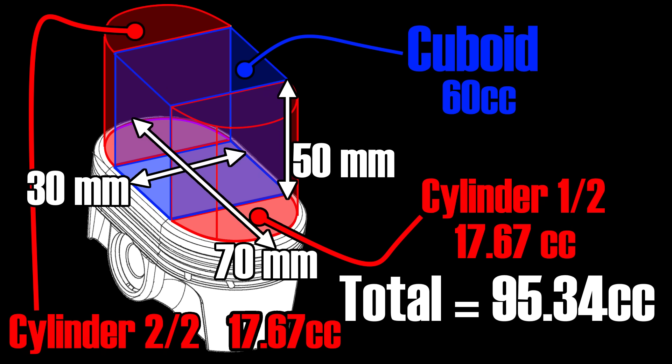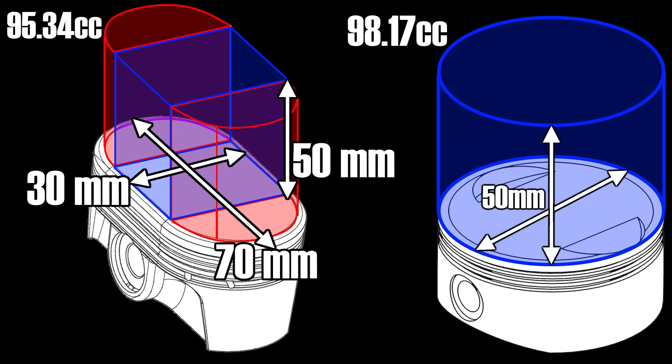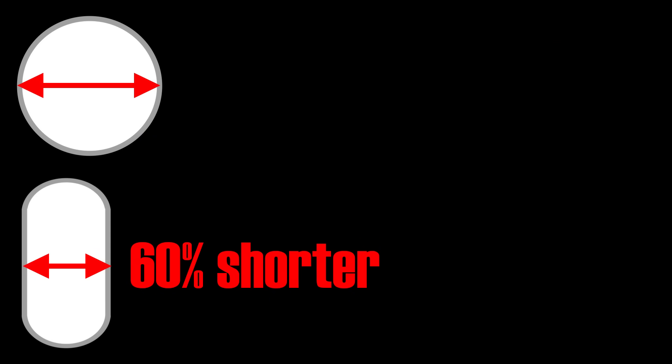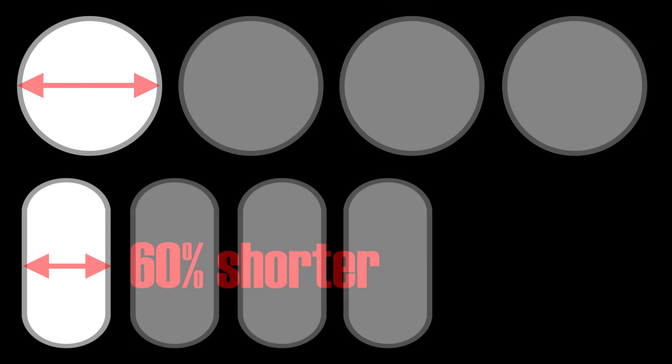Now, let's assume that we have a pill-shaped piston and a cylinder with a 30mm minor axis and a 70mm major axis and a stroke of 50mm. If we solve the displacement of the cuboid in the middle and the half cylinders at its ends, we're going to get a total displacement of 95.34cc. So, almost the same displacement and thus the same potential performance as our round cylinder, but at only 60% of the total length.